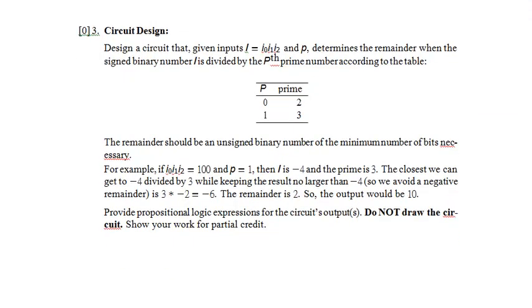Here we have a circuit design question: design a circuit that, given two inputs, determines the remainder when i is divided by the pth prime number according to a table. When p is 0 it's prime number 2, when p is 1 it's prime number 3. The remainder should be an unsigned binary number of the minimum bits necessary. I've got four bits of input, so worst case a 16-row truth table. I'm only dividing by two or three, so the remainder is maybe two bits. Not a really hard circuit design problem, definitely coming back to it.